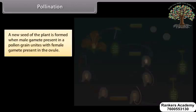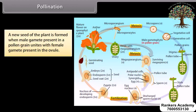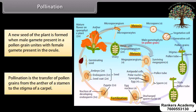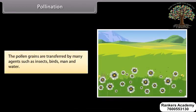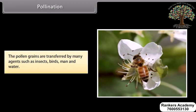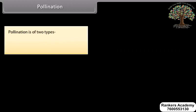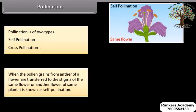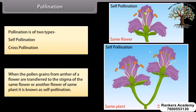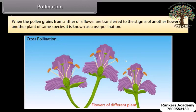Pollination: A new seed of the plant is formed when the male gamete present in a pollen grain unites with the female gamete present in the ovule. Pollination is the transfer of pollen grains from the anther of a stamen to the stigma of a carpel. Pollen grains are transferred by many agents such as insects, birds, man, and water. Pollination is of two types: self-pollination and cross-pollination. When pollen grains from the anther of a flower are transferred to the stigma of the same flower or another flower of the same plant, it is known as self-pollination. When pollen grains are transferred to the stigma of another flower of another plant of the same species, it is known as cross-pollination.